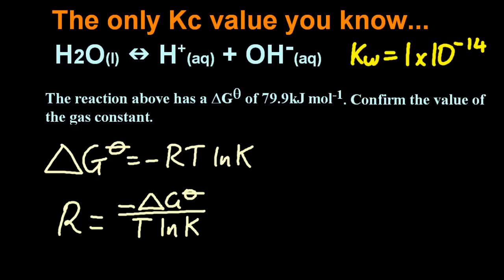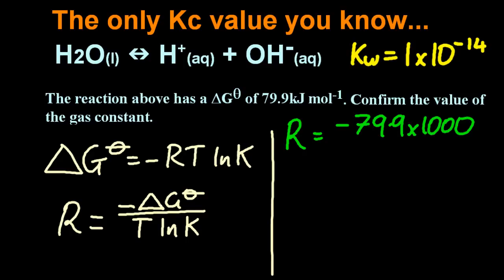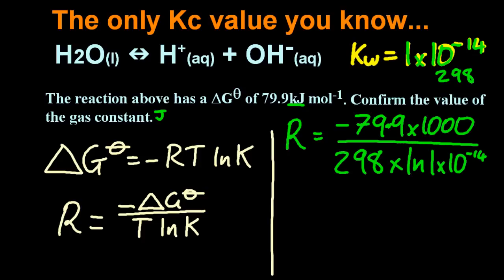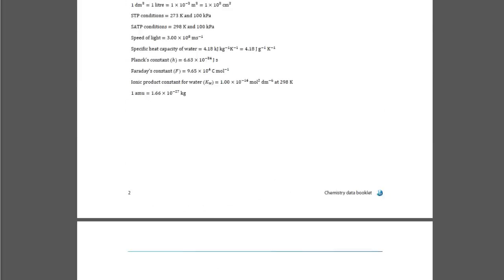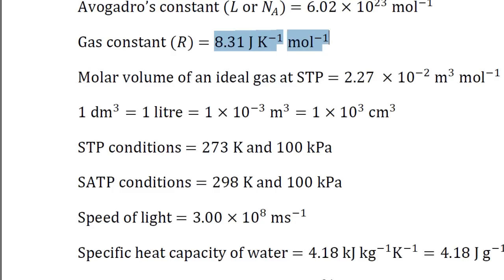So rearranging for the gas constant R. I'm going to convert delta G theta into joules, because I know that R is measured with joules. Temperature, this is assumed to be standard conditions, so 298 Kelvin. And it comes out at 8.32. Let's just check the value in the almighty data booklet. 8.31. Okay, so it works. That's not bad considering we're using one sig fig for KW.